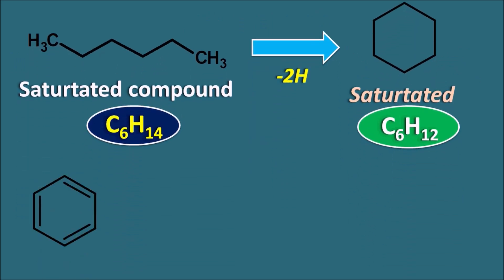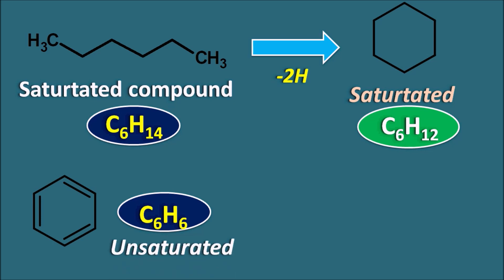Let us take another well-known compound: benzene. Benzene has the molecular formula C6H6, and it is familiar that benzene is unsaturated because of the presence of three pi bonds. Benzene does not act like an unsaturated compound because of resonance, but structurally we can observe three pi bonds. Comparing with the saturated open-chain compound, benzene has eight fewer hydrogens.